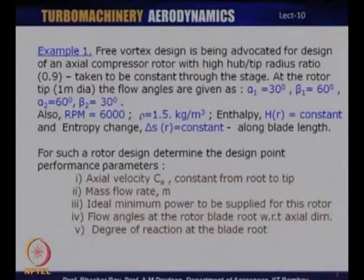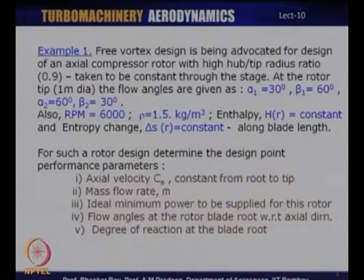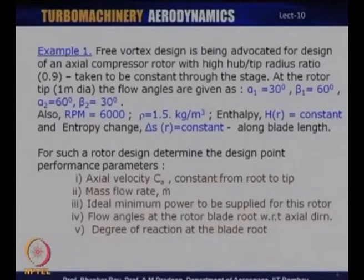This high hub-to-tip ratio is constant from the leading edge of the rotor through to the trailing edge of the stator — a constant radius hub and tip stage. This would typically be valid for the last or second-to-last stage of an axial flow compressor. At the rotor tip the diameter is 1 meter. The flow angles given are: α₁ = 30°, β₁ = 60° (relative). At the rotor exit, α₂ = 60° and β₂ = 30°.